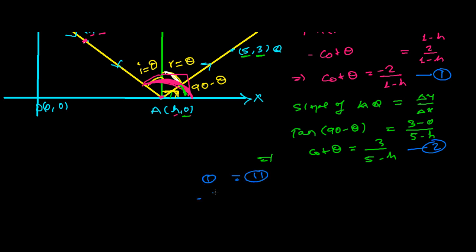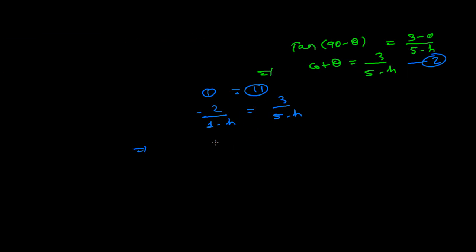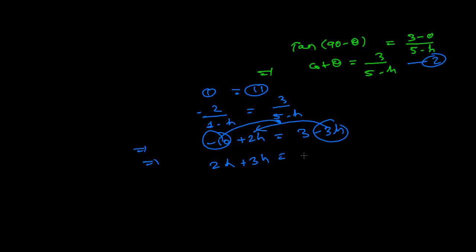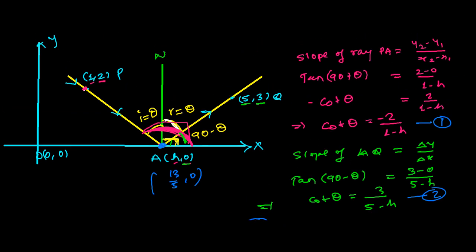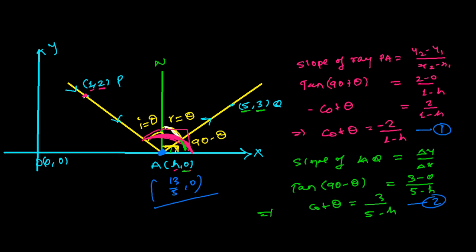Equating the two expressions: negative 2 over (1 minus h) equals 3 over (5 minus h). Cross-multiplying gives negative 10 plus 2h equals 3 minus 3h. Bringing like terms together: 2h plus 3h equals 3 plus 10, so 5h equals 13, therefore h equals 13 over 5. The coordinates of point A are (13/5, 0). This is the point on the x-axis where the reflection took place. I hope you understand how to solve this type of problem.